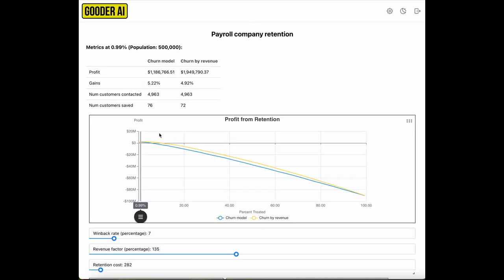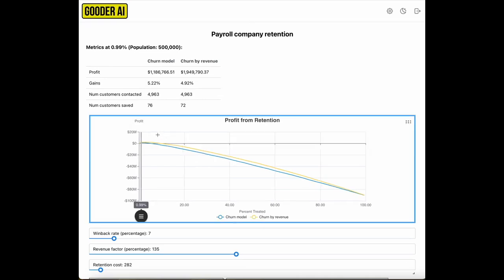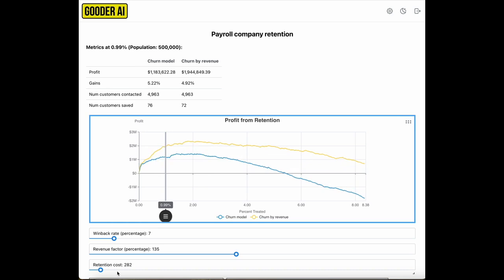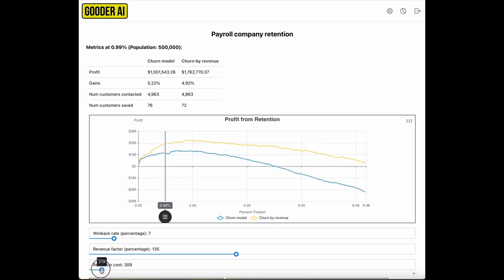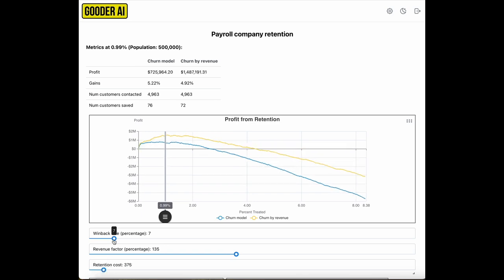One more example. Here we are targeting retention offers to potential B2B churners, customers that are going to quit or defect, for a payroll company. Once again, zooming in because we're going to only expend this expensive retention campaign. Let's say something that costs, on average, $282 for the wining and dining of a customer considered at risk of leaving. So you've got a retention team. They could be spending various amounts. It depends on what your plans are.